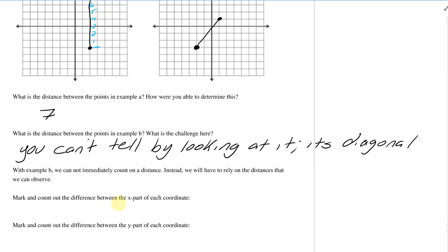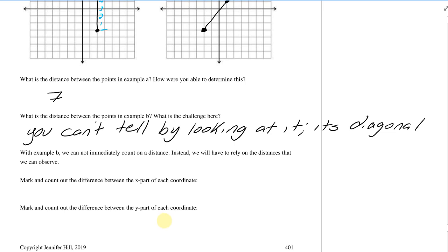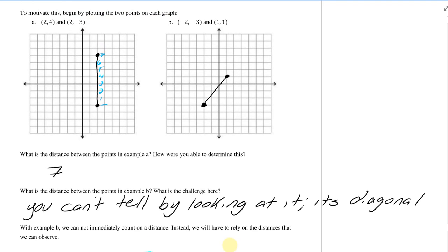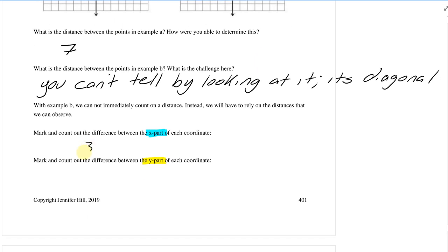What we're going to do instead is mark and count out the difference between the x part of the coordinate and the y part of the coordinate. I'll use a blue highlighter for the x part and a yellow highlighter for the y part. So counting between the x's, I go this distance — that's the difference between the x's. And then for the y's, I go this direction. For the blue highlighter, that's 1, 2, 3 — so this is three. And for the yellow highlighter, starting here, I go up 1, 2, 3, 4. So I can mark those distances: here's three, here's four.